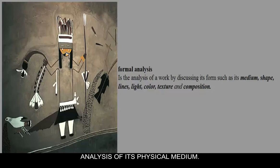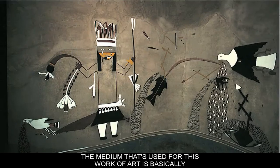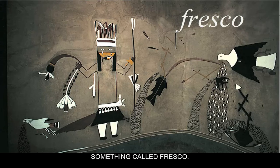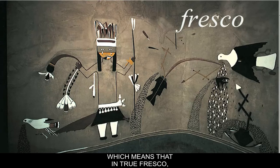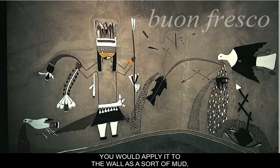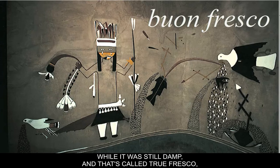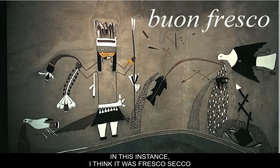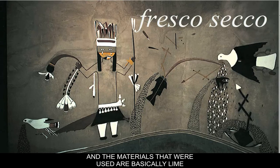The medium used for this work of art is basically fresco. I don't think this is true fresco — in true fresco, you would take plaster, some kind of lime, grind it up, apply it to the wall as a sort of mud, add chalk dust, and paint directly on it while it was still damp. That's called true fresco, or buon fresco, spelled B-U-O-N. In this instance, I think it was fresco secco — S-E-C-C-O — which means dry fresco. The materials used are basically lime, plaster, chalk, and mud.